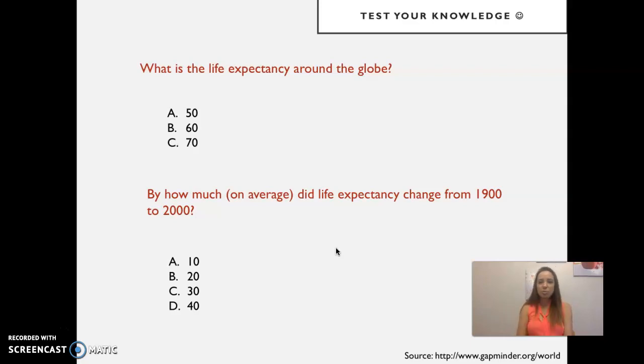In the previous week, I started with a knowledge test about a particular aspect of world health, which is life expectancy. We asked two questions: What is the life expectancy around the globe? And by how much, on average, did life expectancy change from 1900 to 2000? But we found out through our lab that life expectancy around the globe right now is 70 based on data from year 2000, and that it changed about 40 years on average.